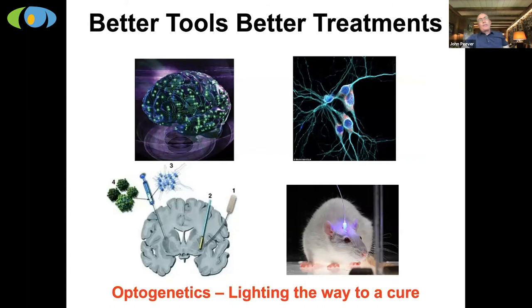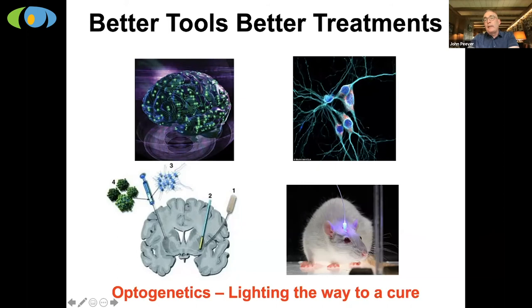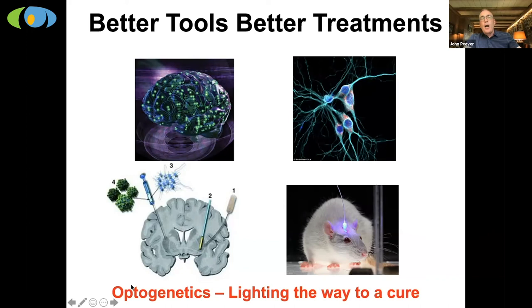I want to make it entirely clear that I did not develop these techniques — they were developed by folks at MIT, Harvard, and Stanford. We've been able to use a new technique called optogenetics, which allows us to genetically turn on or turn off any cell in the brain that we would like, using light. We can deliver, via a virus, a specific protein to cells — for example in the SLD — and either turn them on or turn them off.